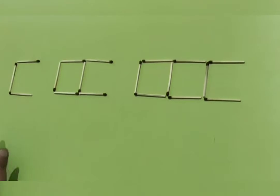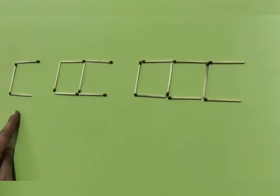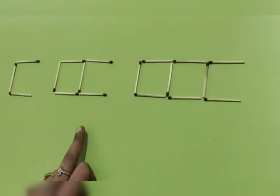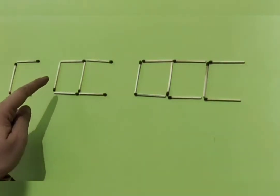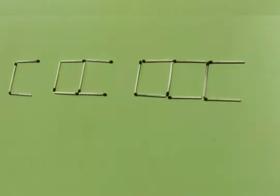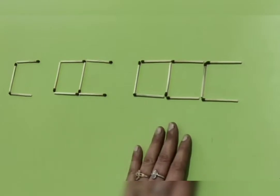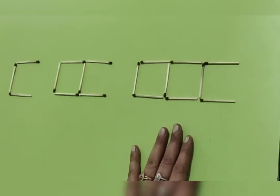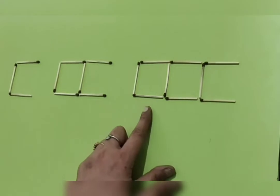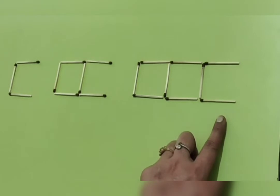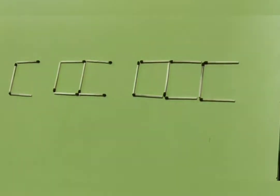Now, how many matchsticks are used to make one C? For one C we have used three matchsticks. For two C's, count: one, two, three and one, two, three — that is three plus three equals six. Similarly, for three C's: three for the first, three more for the second, and three more for the third — three times three means nine matchsticks used.